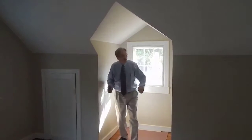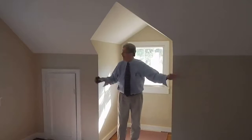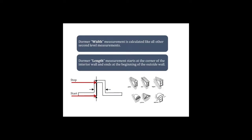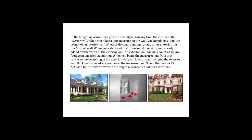When you do the width, the measurement is simple — it's just like any other upper level interior measurement. You're going to add five tenths, or six inches, for both exterior walls. You can see the styles vary, but they're all basically the same components. The width is measured like all other second level measurements, and the length does not get measured the same way.